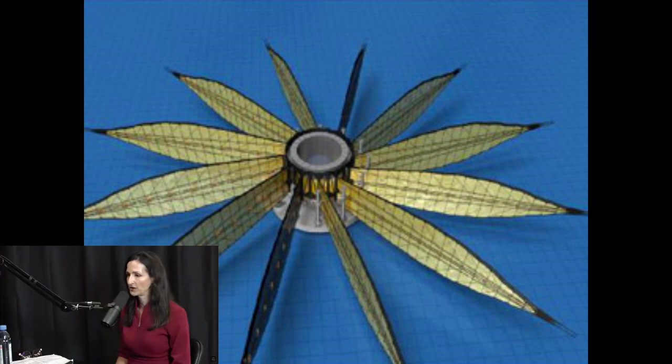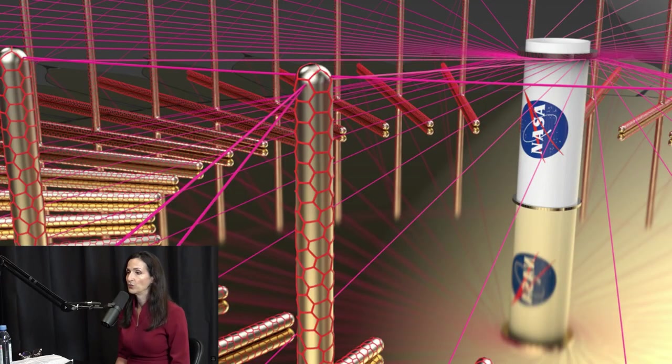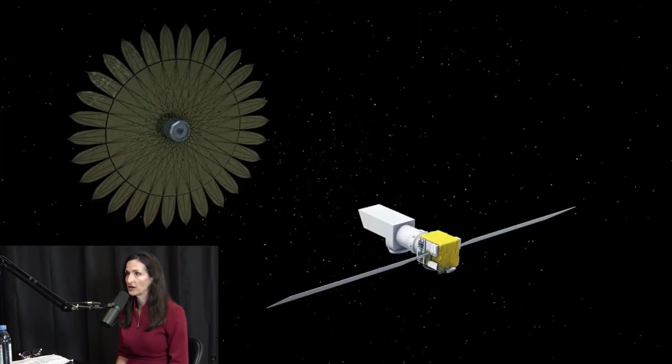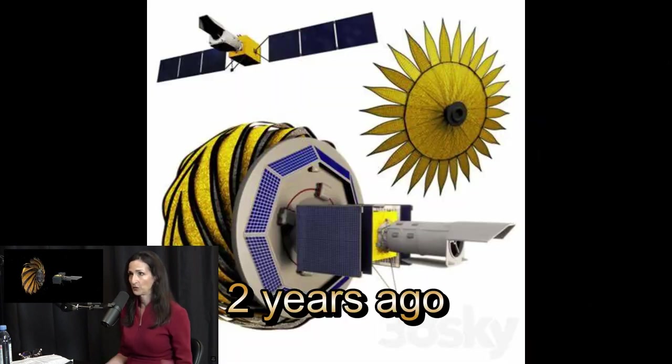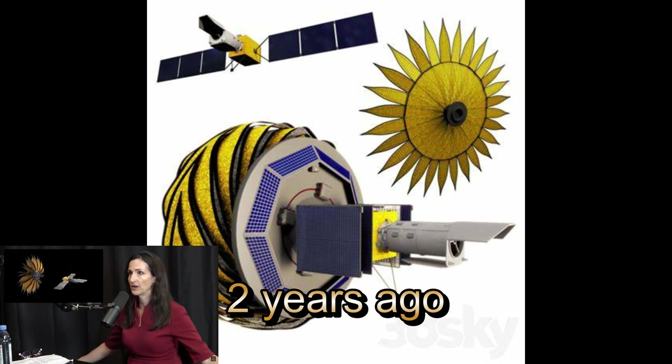Right. So what's amazing about starshade is it was first conceived of in the 1960s. Imagine that and revisit it every decade until now when we think we can actually build it. And starshade is a giant specially shaped screen. It is about, there's different versions of it, but think about 30 meters in diameter.